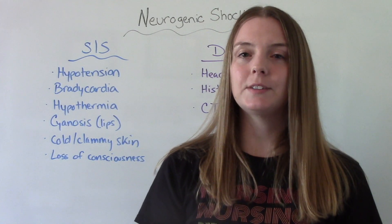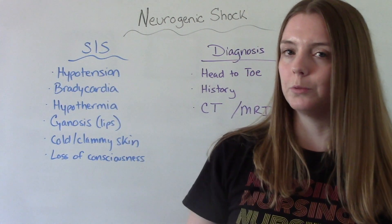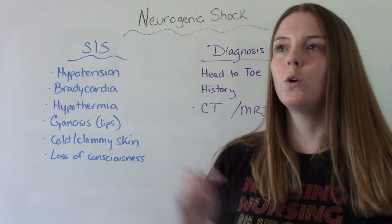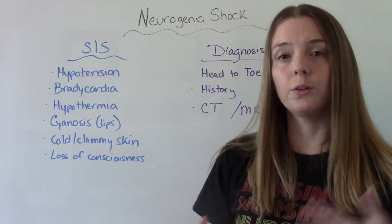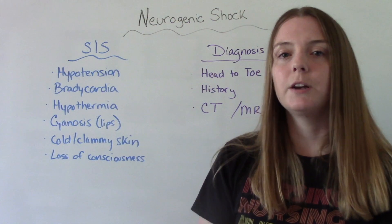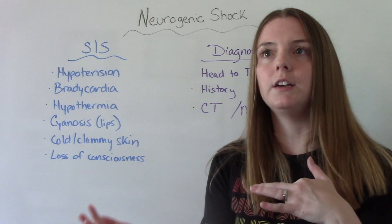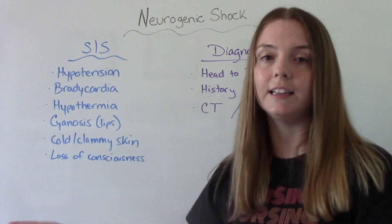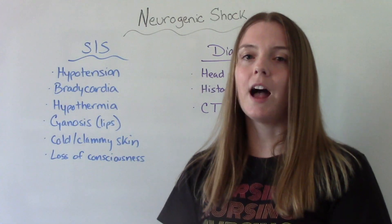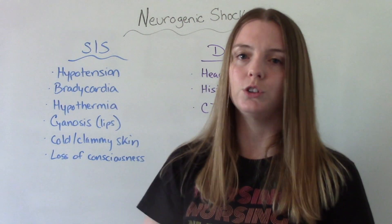When it comes to signs and symptoms, you're going to notice a pattern. The patient is going to be hypotensive — very low blood pressure — and bradycardic, so a low heart rate. They'll have hypothermia or temperature instability; they can't control their temperature and usually get really cold, so they're going to have cold, clammy skin. They might become cyanotic, especially around the mucous membranes near the lips, and eventually they'll have a loss of consciousness. Everything is going down — decreased venous return, decreased cardiac output, decreased oxygen, decreased perfusion.